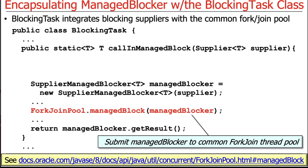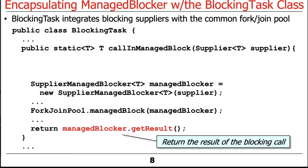The ManagedBlocker is implementing the ManagedBlocker interface. We submit that, and then when we're done, we get the result. This get-result call will not be a blocking call — the earlier call could be and will probably be a blocking call. It just returns the results obtained by calling this supplier.